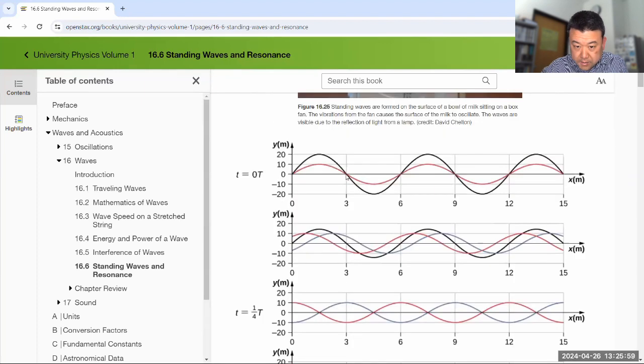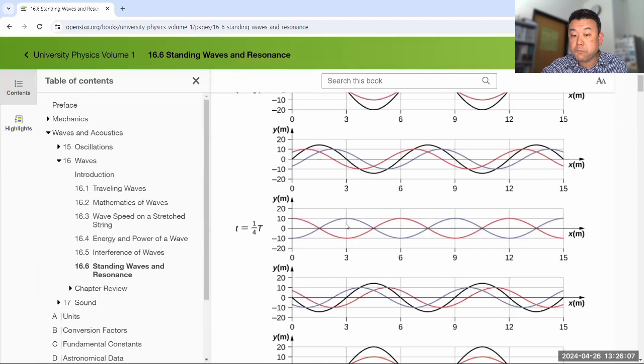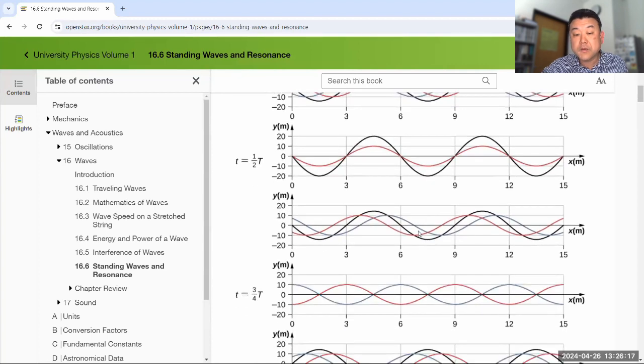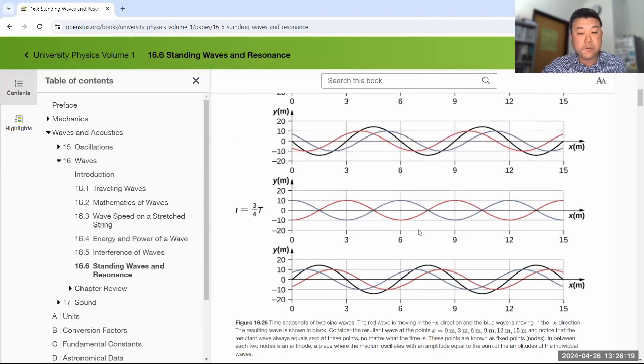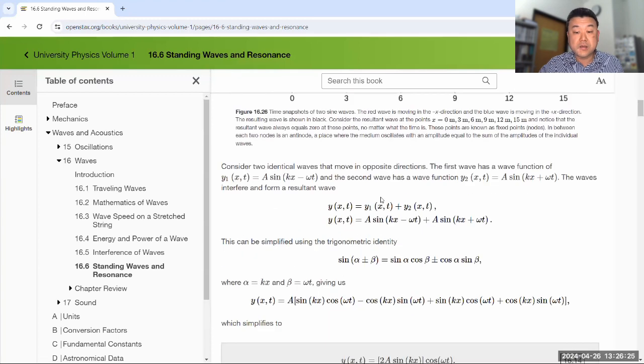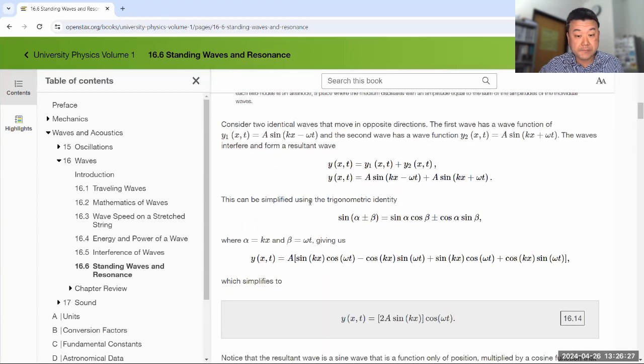Now as you track it, there are points that don't move at all. Like 3, 6, 9, 12. They remain at zero at all points of the cycle. And you can identify antinodes, points that move the most. That would be like 1.5, 4.5, 7.5, and so on. So when waves form that kind of standing, stationary shape, we call that standing wave.